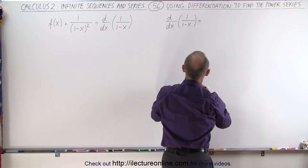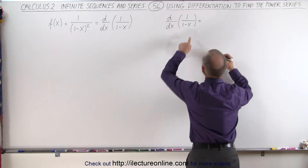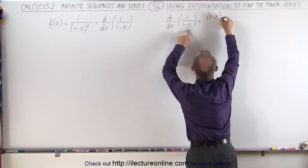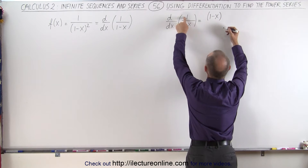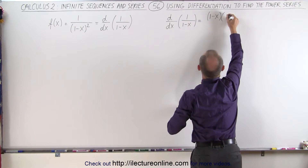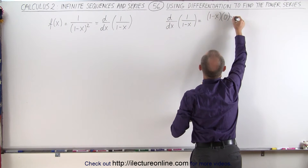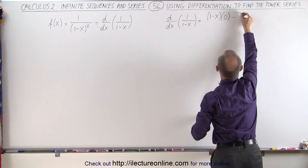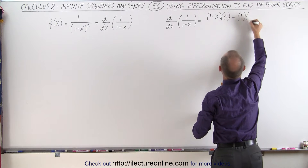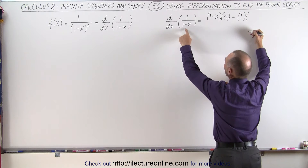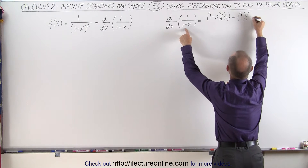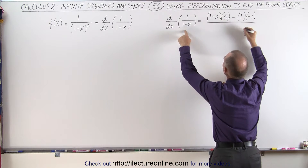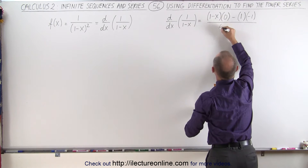Since it's a quotient, we take the denominator, 1 minus x, times the derivative of the numerator, which is 0, minus the numerator, which is 1, times the derivative of the denominator, which is minus 1, all divided by the denominator squared.